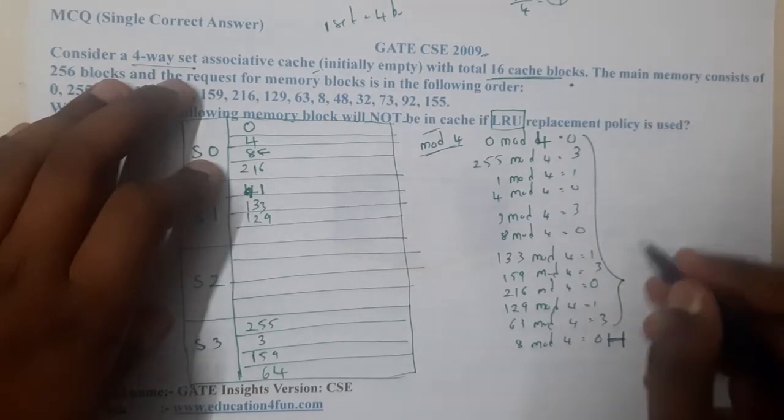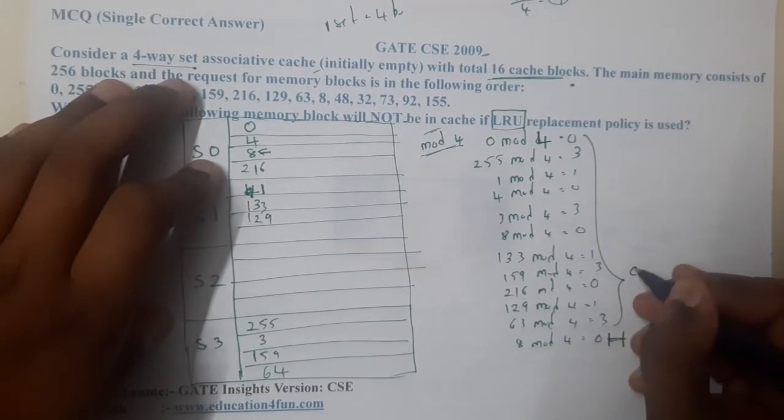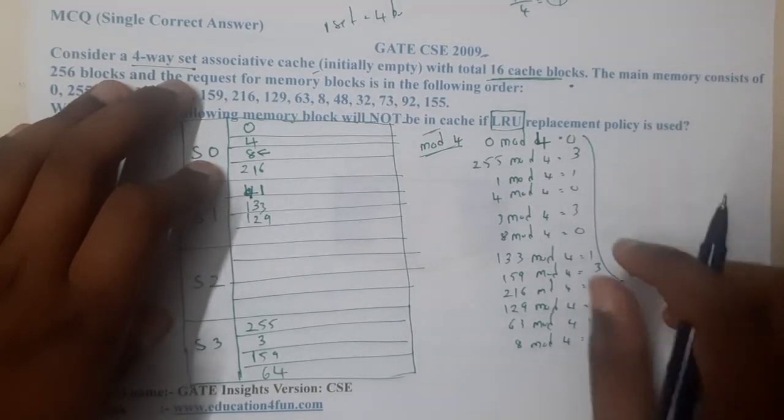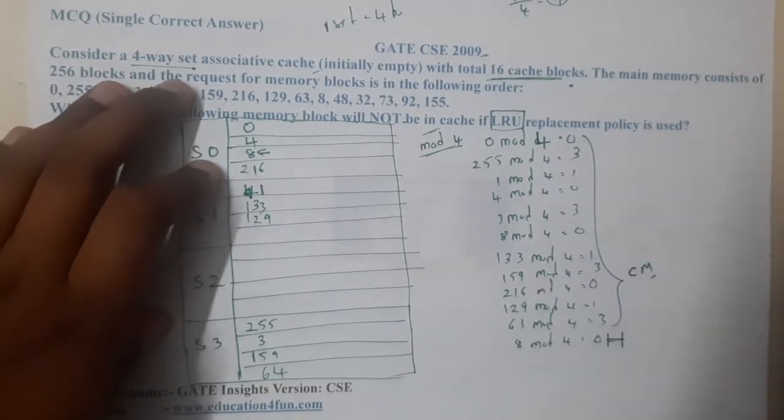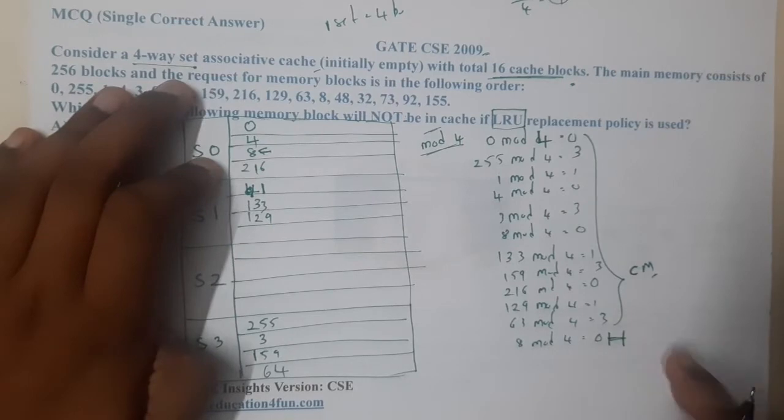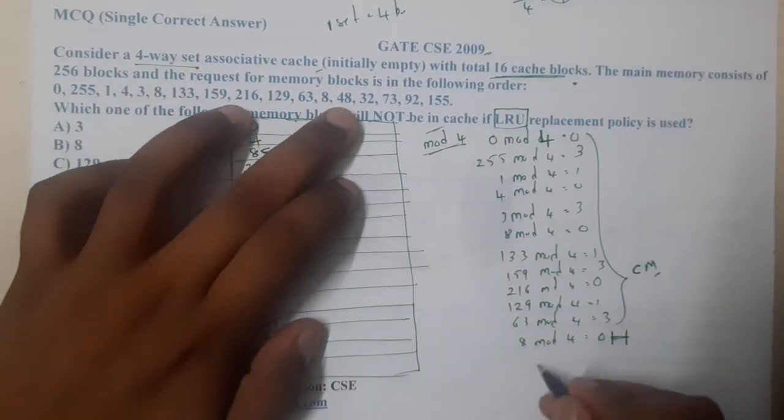Till now everyone is okay? Till now each and every element is a compulsory miss because compulsorily they are going to miss. They are coming for the first time, right? Yes, these are just for our understanding.